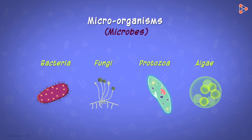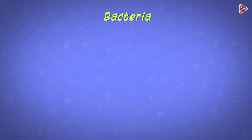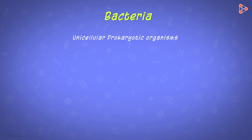Let's get introduced to each. Let us begin with bacteria first. They are usually unicellular prokaryotic organisms. Unicellular, as the name suggests, means made up of a single cell — so the entire body of the organism consists of just one cell.